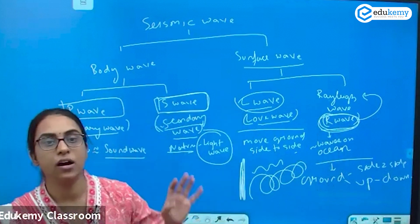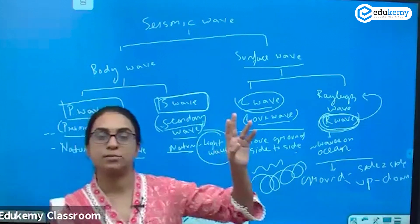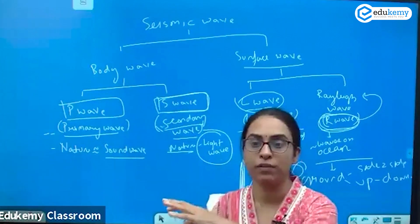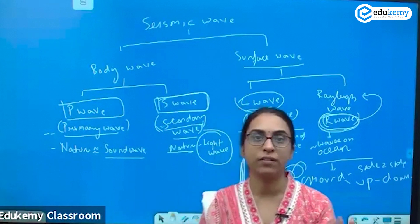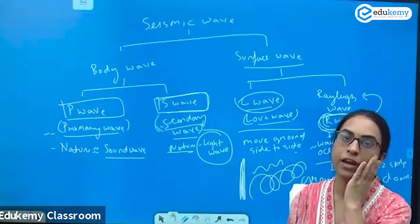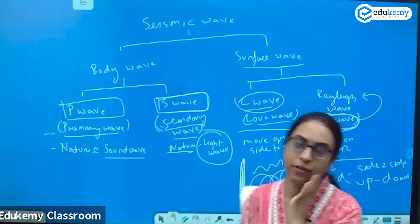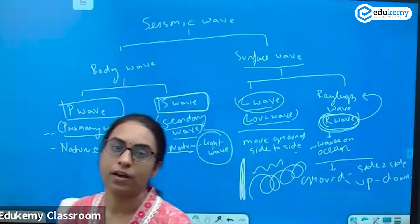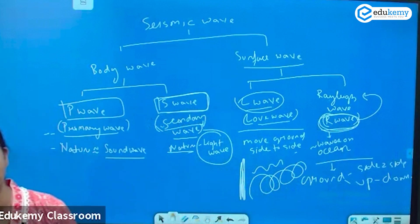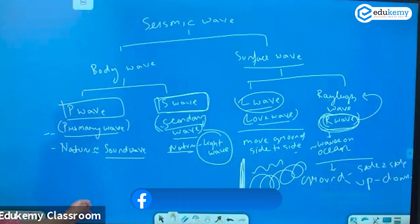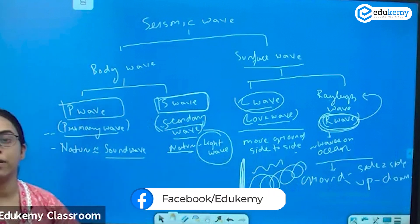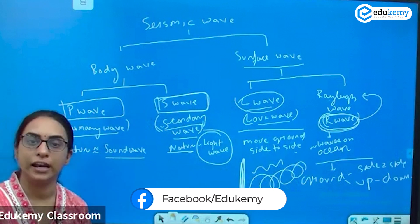To summarize: seismic waves are of two types — surface wave and body wave. Body waves include the P wave and S wave. Surface waves include the L wave and the R wave. P wave is like a sound wave; S wave is like a light wave.